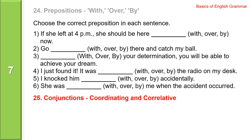Now choose the correct preposition in each sentence. If she left at 4 p.m., she should be there — by — now. Go — over — there and catch my ball. With your determination, you'll be able to achieve your dream. I just found it — it was by the radio on my desk. I knocked him — over. She was with me when the accident occurred.